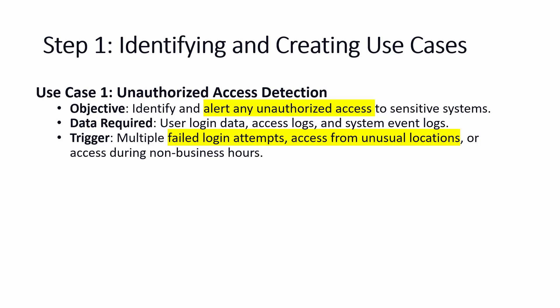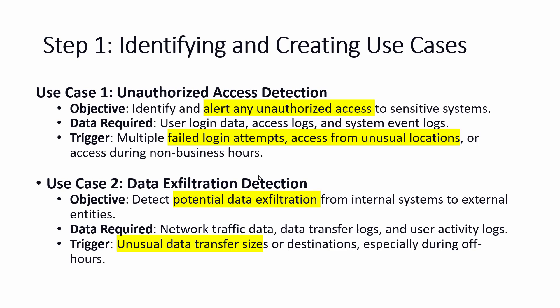Our first use case is unauthorized access detection. The objective is to identify and alert on any unauthorized access to sensitive information. The data required is user login data, access logs, and system event logs. Triggers are: multiple failed login attempts, access from unusual locations, and access during non-business hours. We set a threshold — if a user enters the wrong password more than three or four times, start generating a log. Access from an unknown IP location outside the known range also triggers the alert.